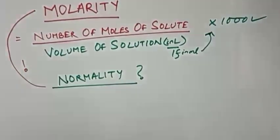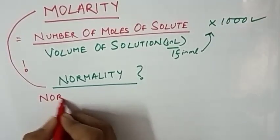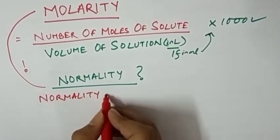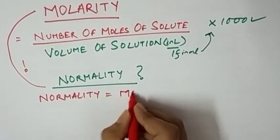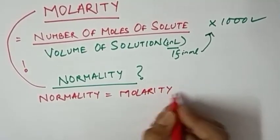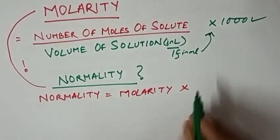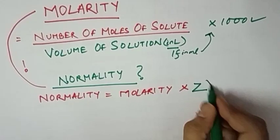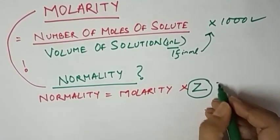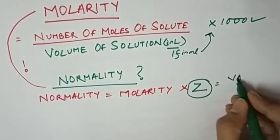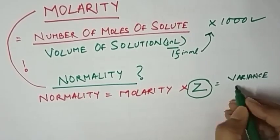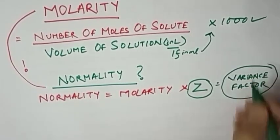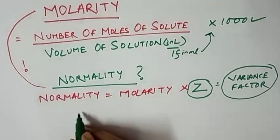Now we'll learn about normality. What is normality? There is a relation between normality and molarity. Normality is equal to the molarity multiplied by Z. What is this Z? Z is called valence factor in terms of normality.